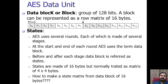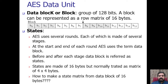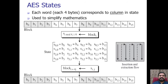Next is the state concept. A state represents all processed input — after the input is processed, we find the output, which is the processed value, called the state. At the start or end of each round, AES uses the term data block. Before and after each stage, the data block is referred to as the state. So whatever the input is, after processing, the output we receive is called the state.